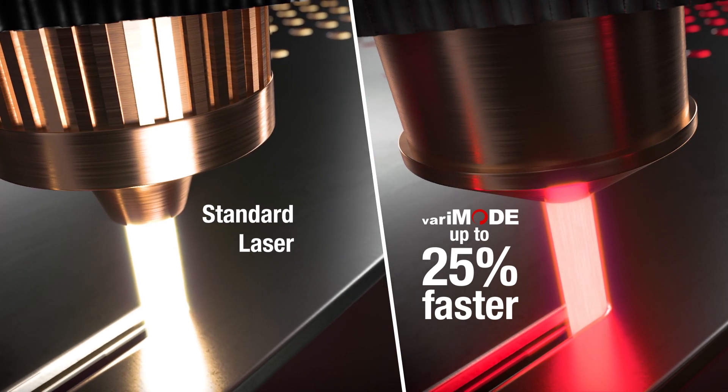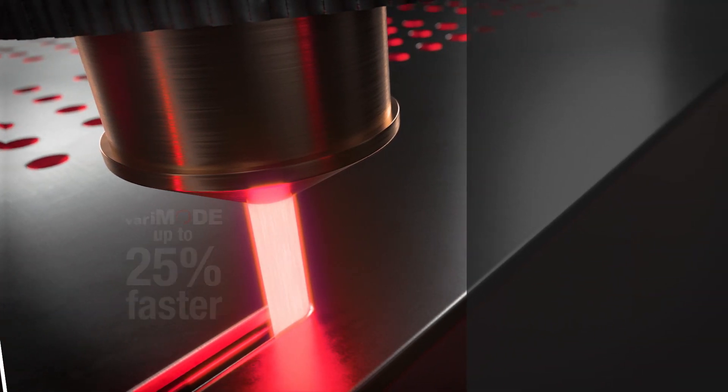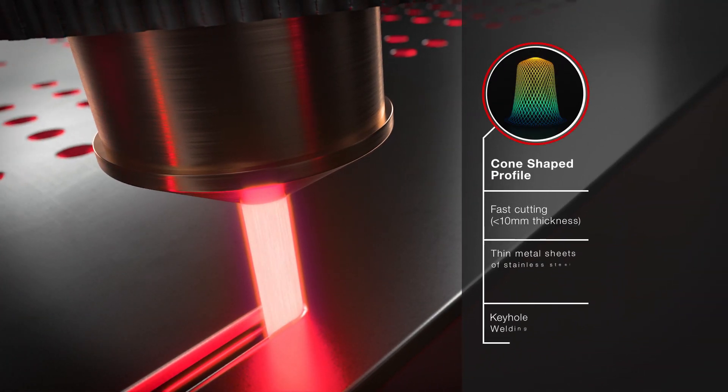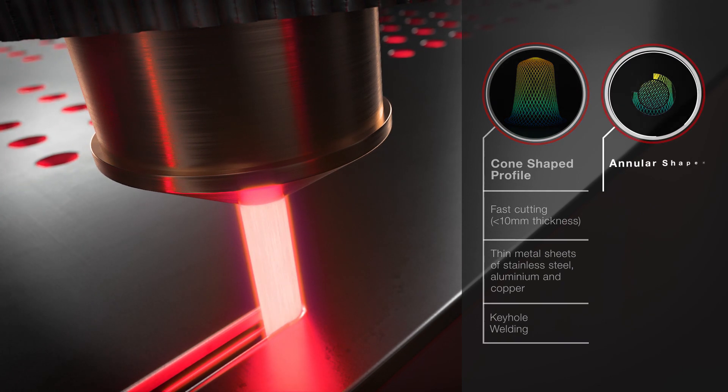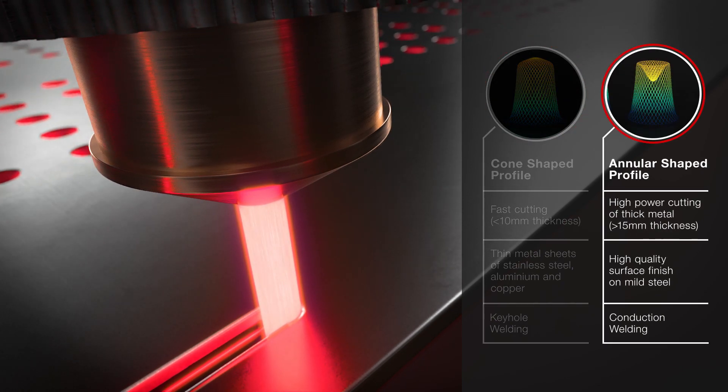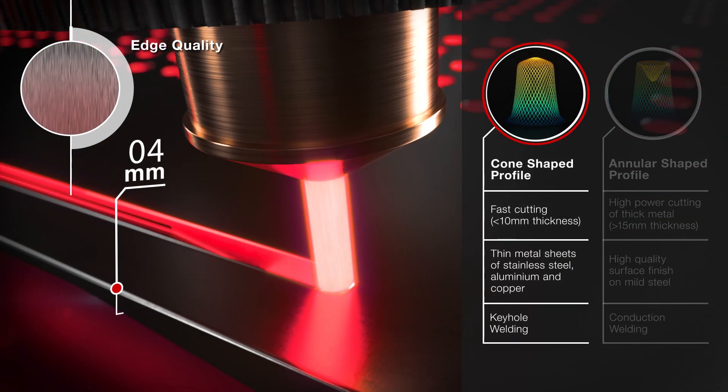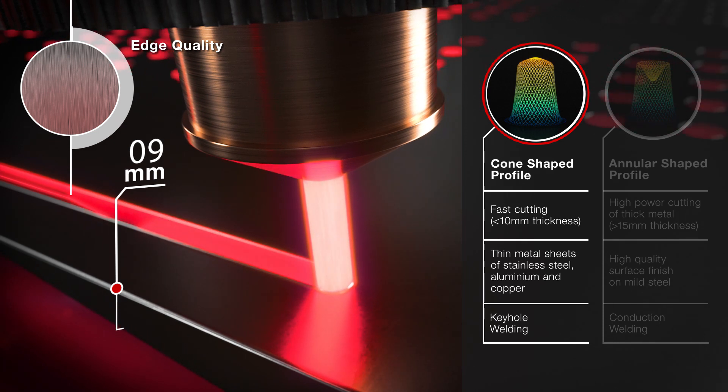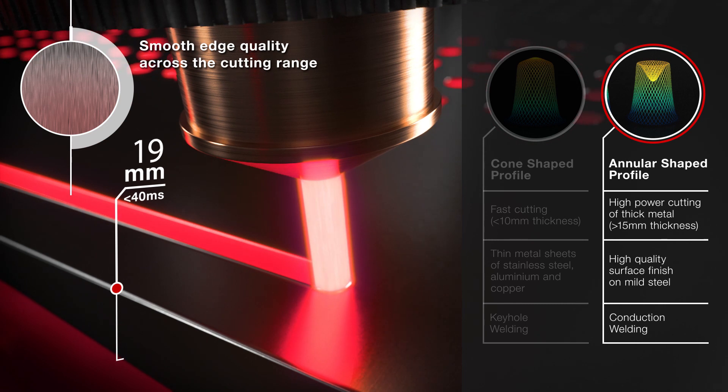Each beam has different characteristics. A cone-shaped profile is best suited to piercing and cutting thinner materials, while an annular-shaped profile is used for cutting thicker materials. VaryMode allows for virtually instantaneous beam switching, so the quality of cutting is never compromised, no matter the thickness of material.